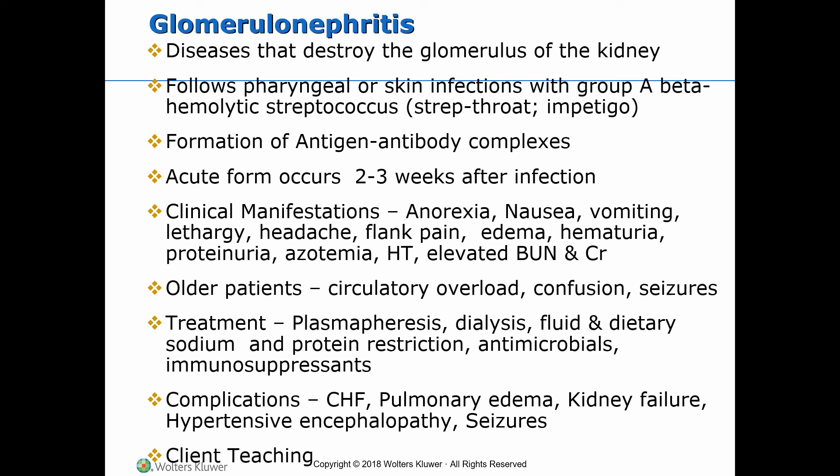Early clinical manifestations may be mild, with pharyngitis, fever, malaise, weakness, and fatigue. Subsequently, patients complain of anorexia, nausea, vomiting, lethargy, headache, flank pain, edema, hematuria, proteinuria, azotemia (which is retention of nitrogenous waste in blood), hypertension, and elevated blood urea nitrogen and serum creatinine. Urine is described as smoky, brown, coffee, or cola-colored due to RBCs in the urine. Lab tests reveal increased serum creatinine levels. Older patients may present with circulatory overload, confusion, and seizures.